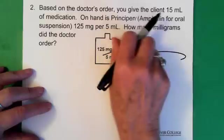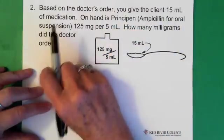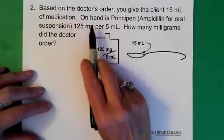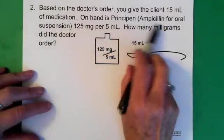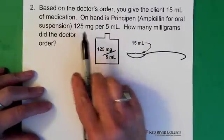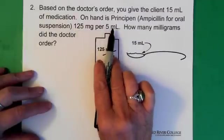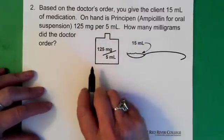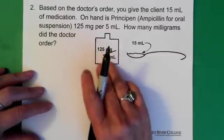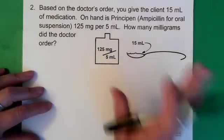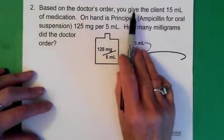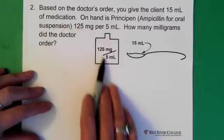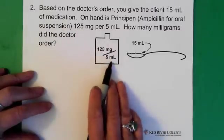Based on the doctor's order, you give the client 15 milliliters of medication. So, here's the 15 milliliters in the spoon. On hand is principine ampicillin for oral suspension, 125 milligrams per 5 milliliters. So, this is what we have on hand in our bottle. And sometimes when people see a question like this, it helps to just draw a picture. What is going on here? So, given the patient 15 milliliters, in the bottle we have 125 milligrams per 5 milliliters.